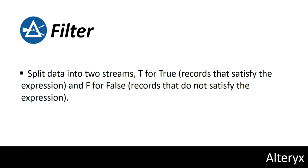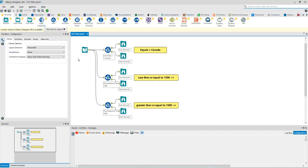Split data into two streams: T for true, records that satisfy the expression, and F for false, records that do not satisfy the expression. Let's run the workflow.